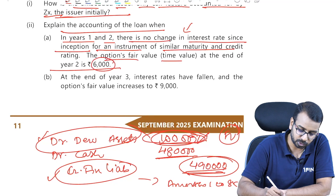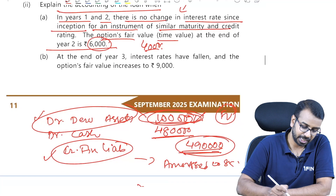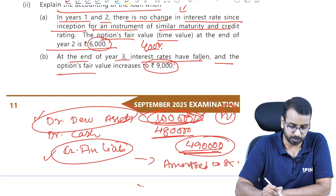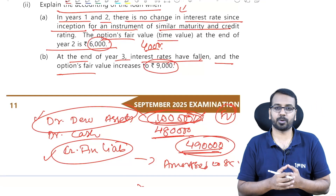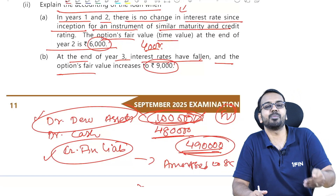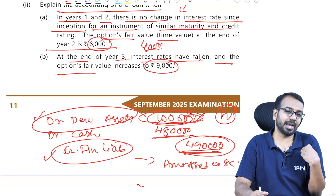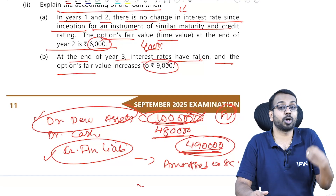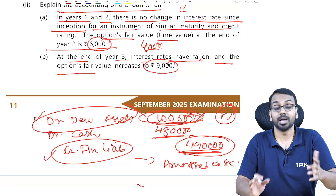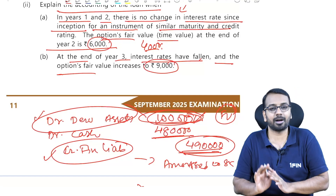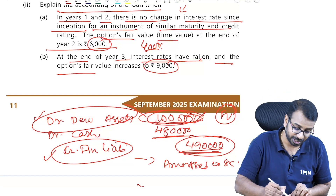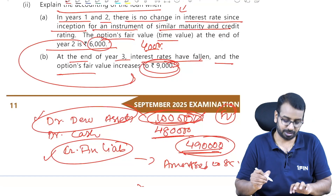In year 1 and 2, there is no change in interest rate since inception for an instrument of similar maturity, and the option fair value at the end of year 2 is 6,000. So the derivative asset went from 10,000 to 6,000 — we will book a loss of 4,000. At the end of year 3, interest rates have fallen and the option fair value increases to 9,000. From 6,000 to 9,000, we will book a profit of 3,000.